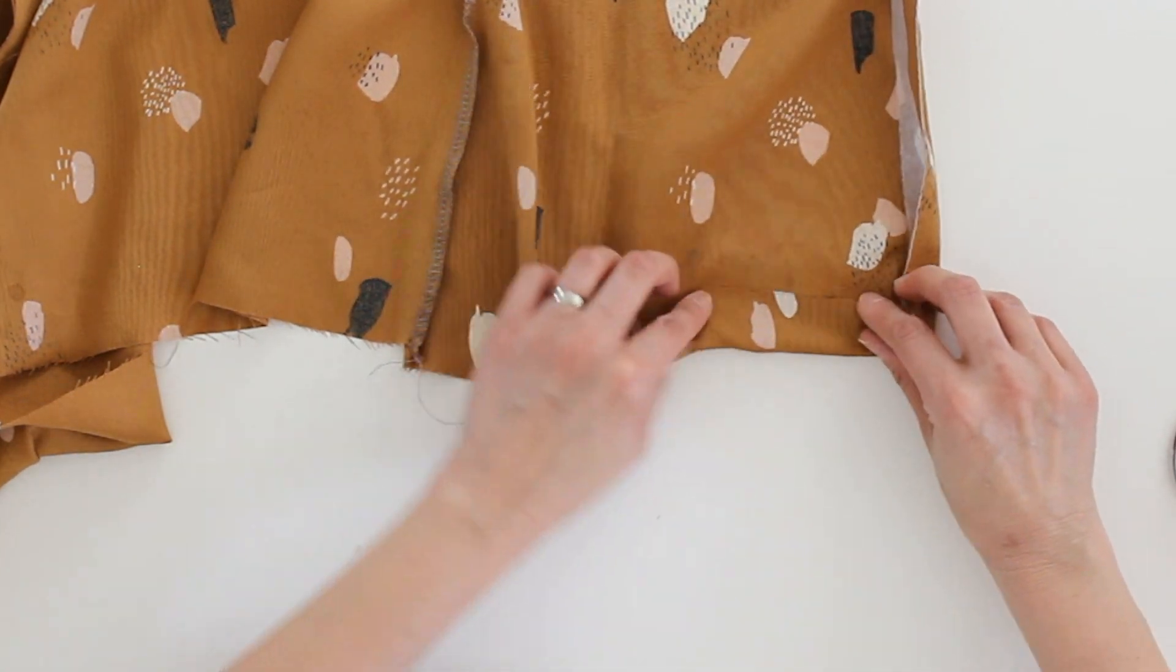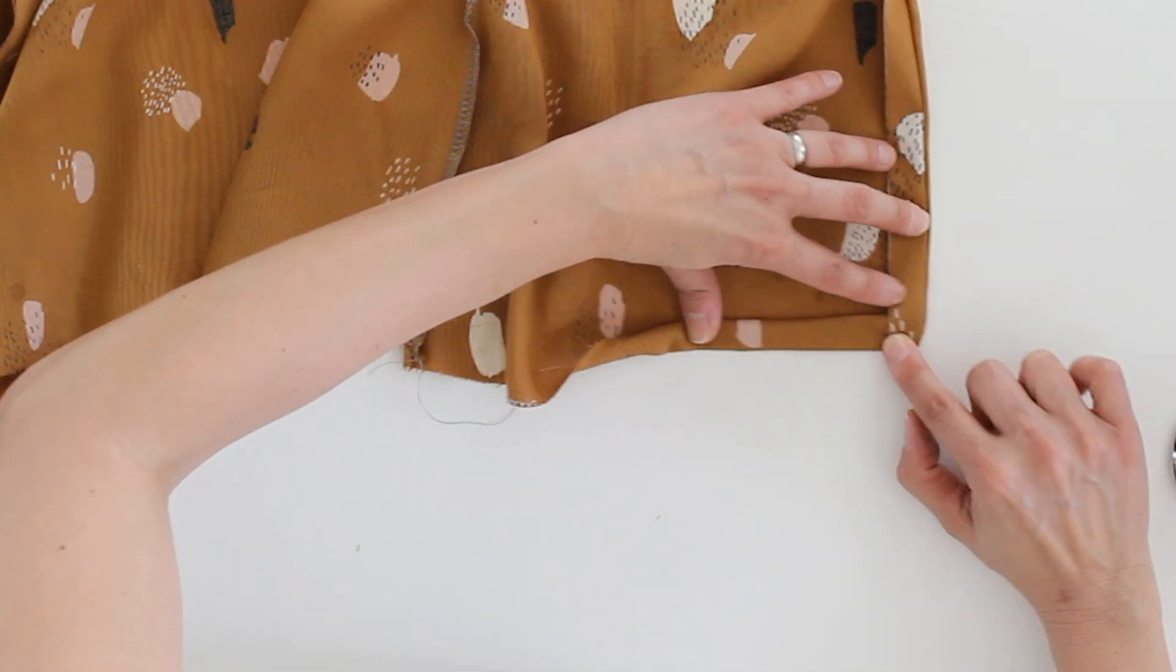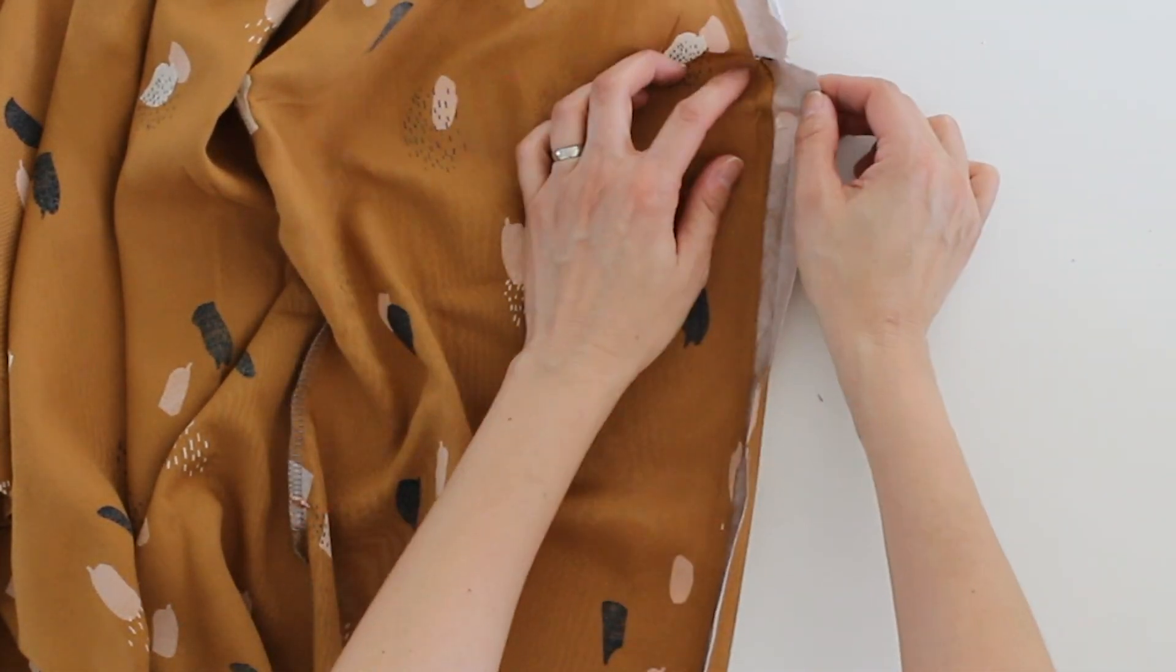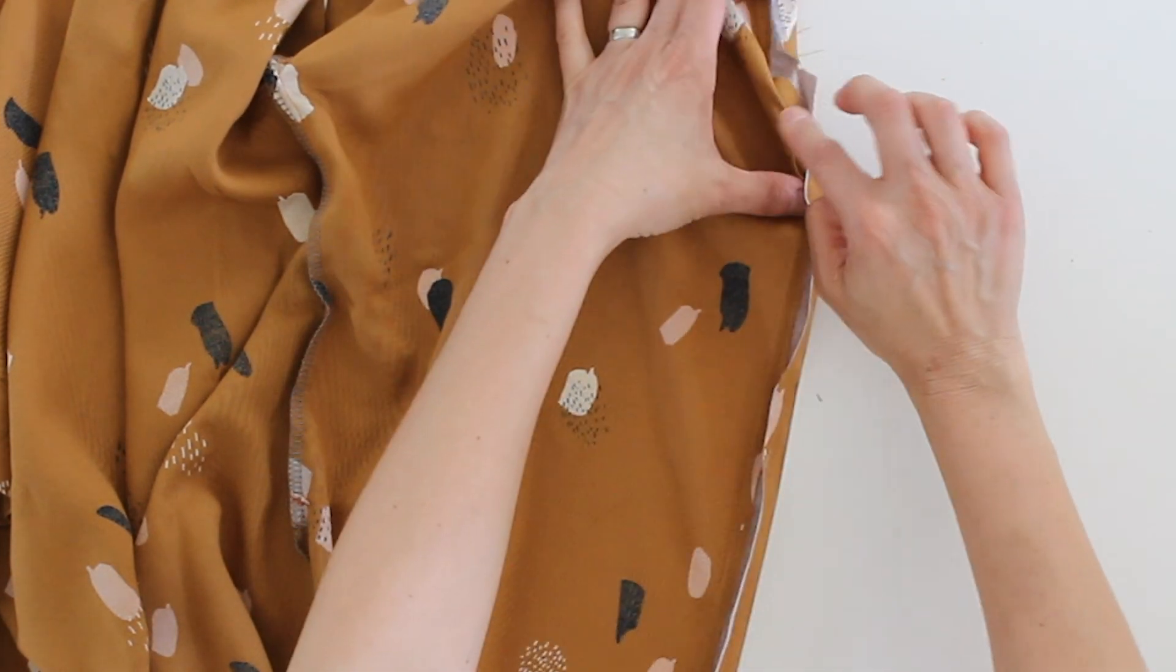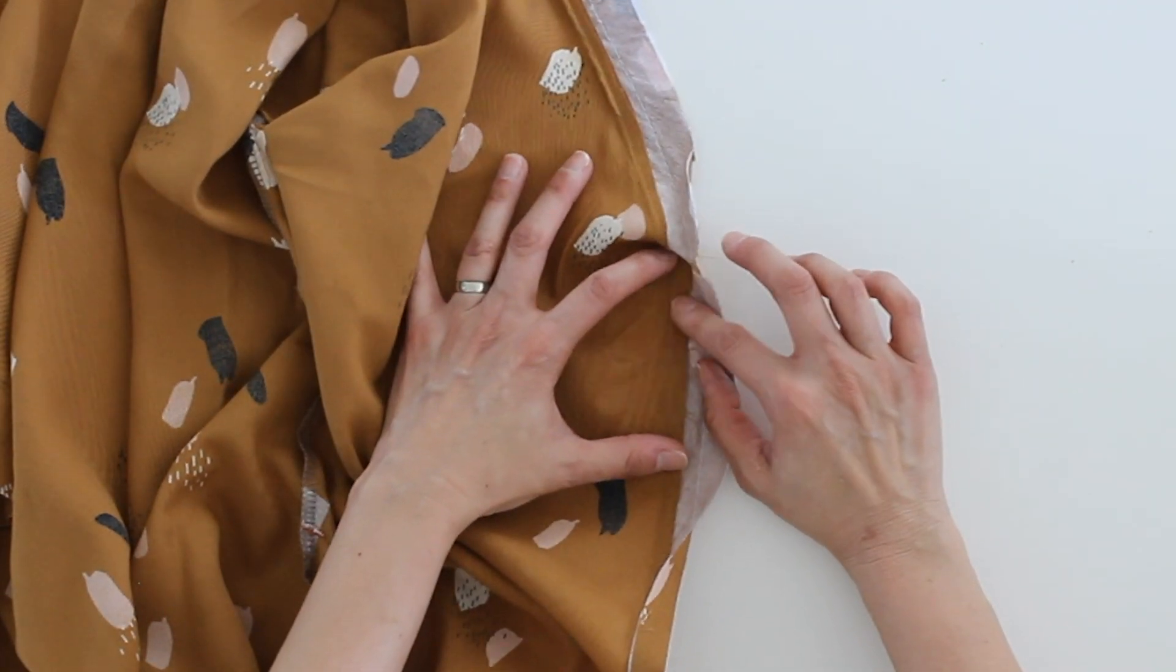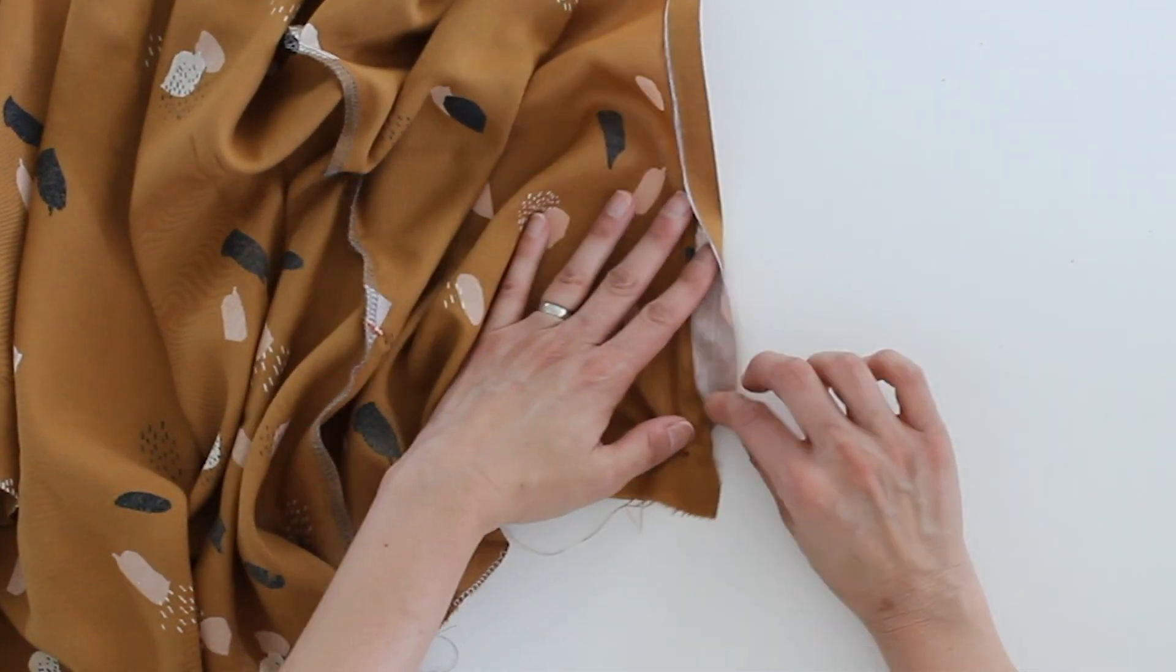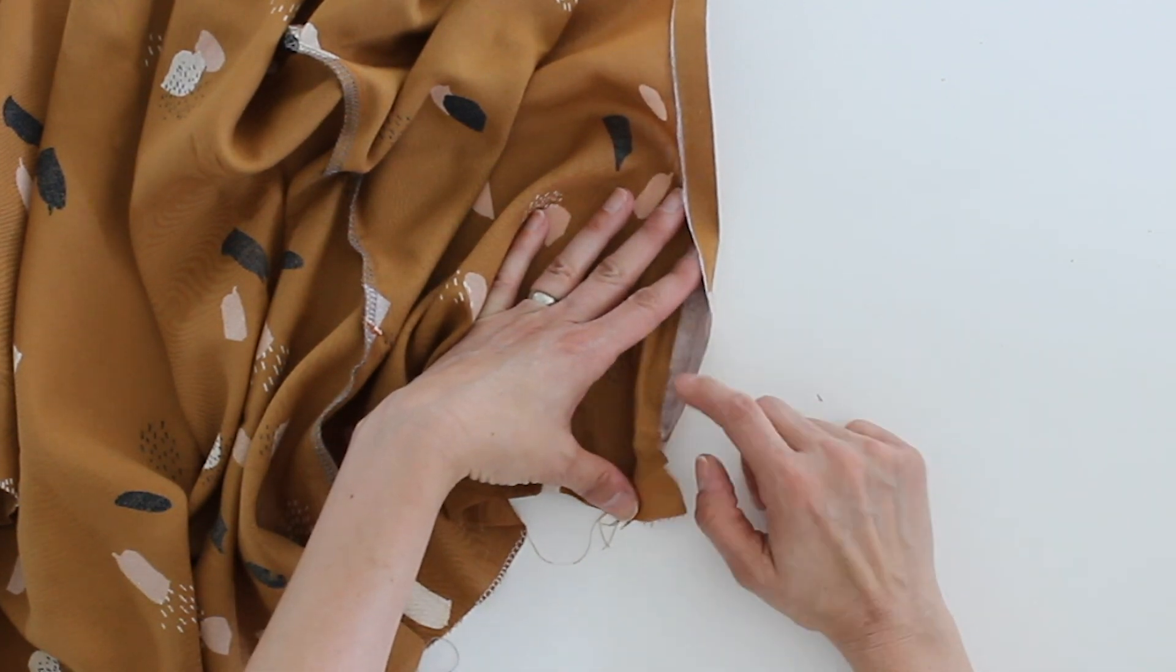I just want to point out one quick thing on this particular understitching. Because we have corners here, like we have this corner that I will push out more with my point turner and press, you cannot stitch all the way into those interior corners with your understitching on the facing. So just get as close as you can and as far as you can into that corner as far as your presser foot will let you get and then stop. It's okay if not all of it gets understitched. The same thing is going to happen down here in this interior corner. You're not going to be able to get the presser foot all the way down into that corner, so just do the best you can.